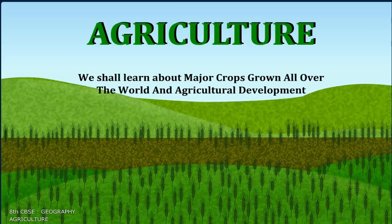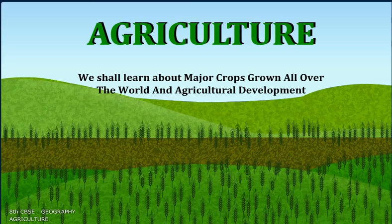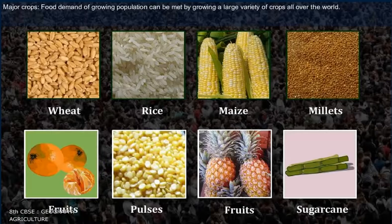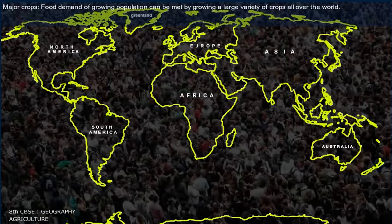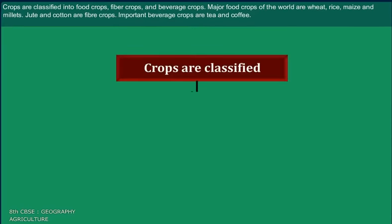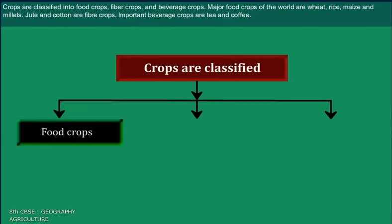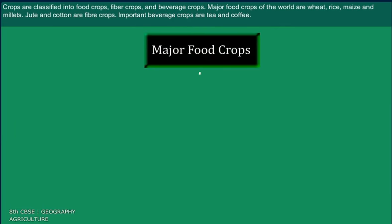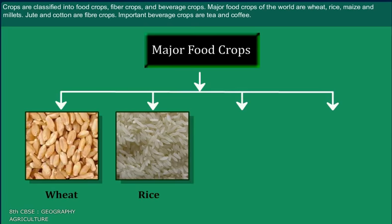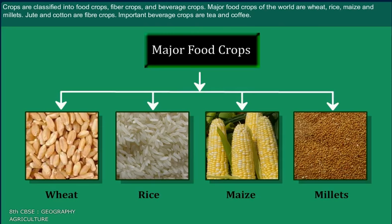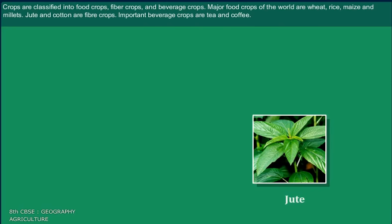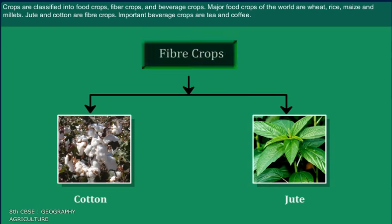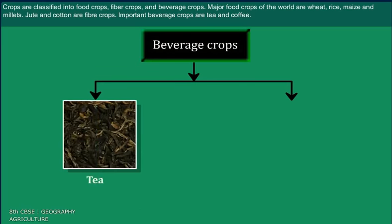We shall learn about major crops grown all over the world and agricultural development. The food demand of a growing population can be met by growing a large variety of crops. Crops are classified into food crops, fiber crops, and beverage crops. Major food crops of the world are wheat, rice, maize, and millets. Jute and cotton are fiber crops. Important beverage crops are tea and coffee.